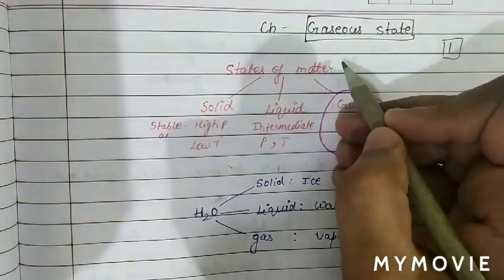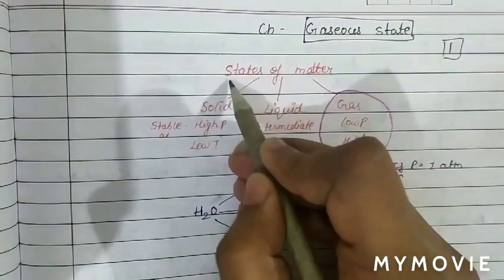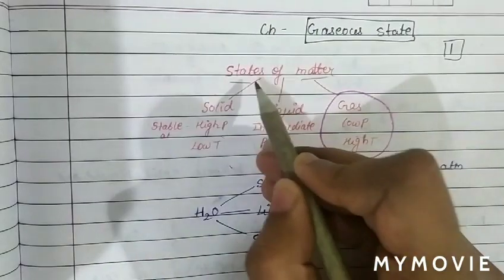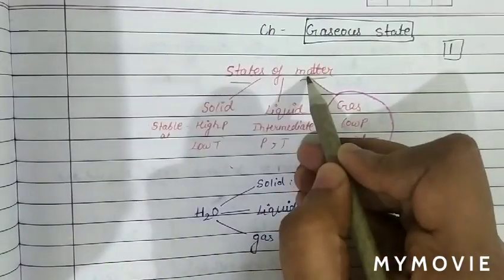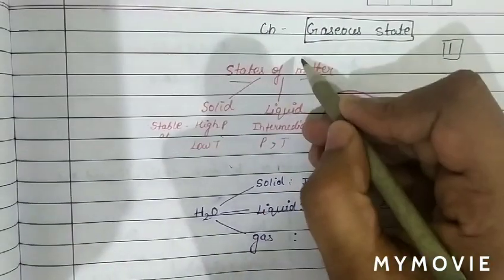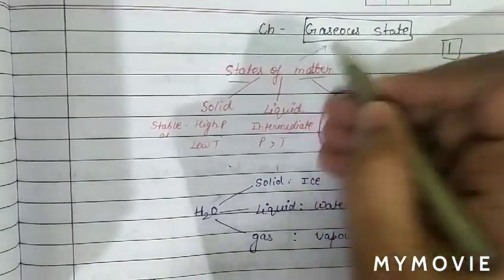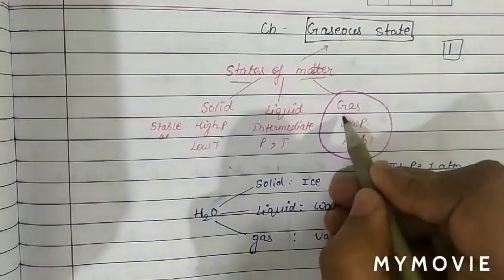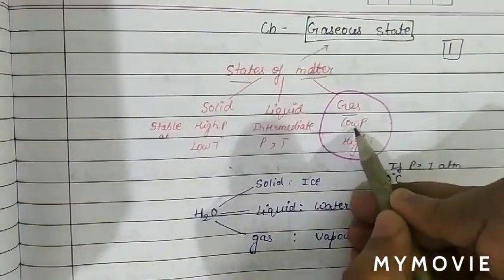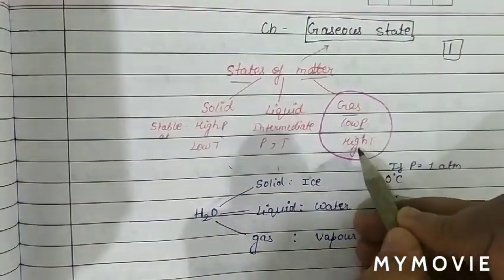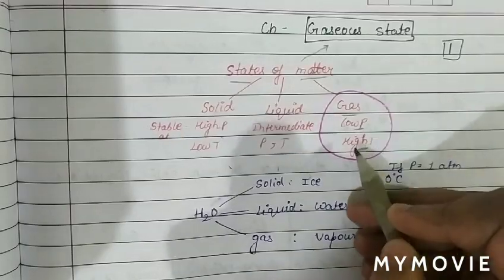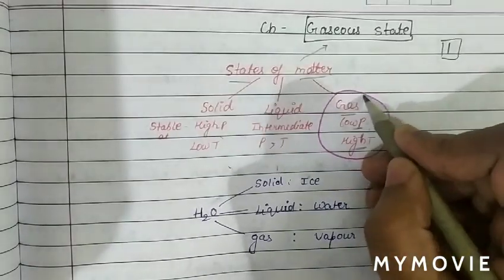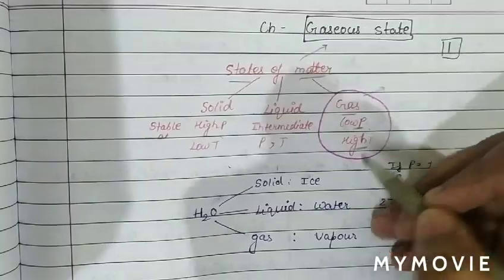The next chapter we are going to start is States of Matter. In this chapter we mainly deal with the gaseous state. The gaseous state is most stable at low pressure and high temperature, and we will 90 percent discuss about gases.